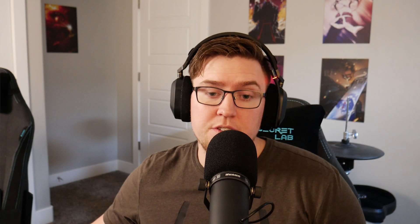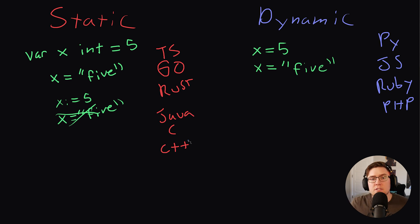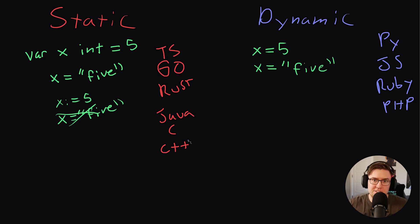Older statically typed languages — things like Java, C, and C++ — they didn't have type inference back in the day. And so this trade-off really did exist. But these days, we can have the best of both worlds with type inference.